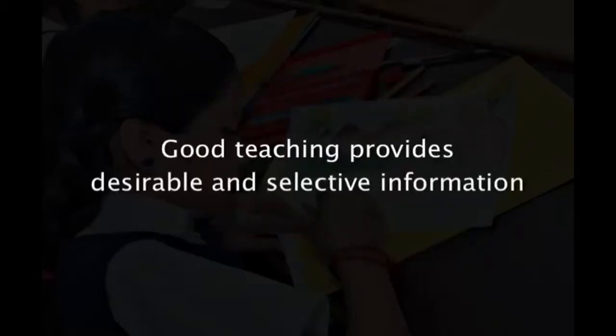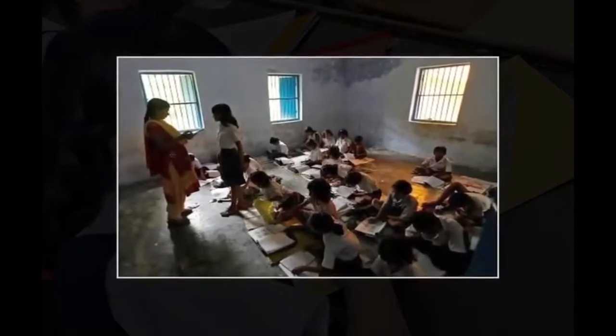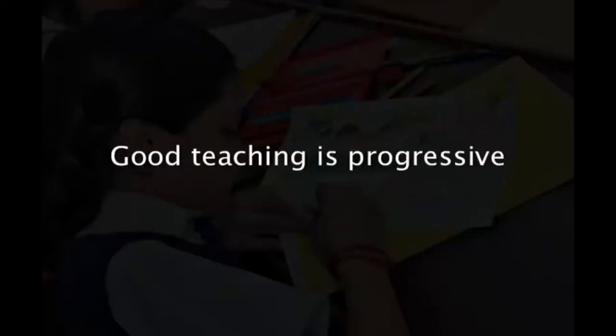Good teaching provides desirable and selective information. A good teacher does not try to teach all information available; instead, makes a judicious selection and teaches what is useful for a good life in society. Good teaching is stimulating — a good teacher stimulates through personality and activities the personality and activities of the pupil. Good teaching is progressive — a good teacher aims at providing improved modes and techniques steadily and helps the child make suitable progress in life.